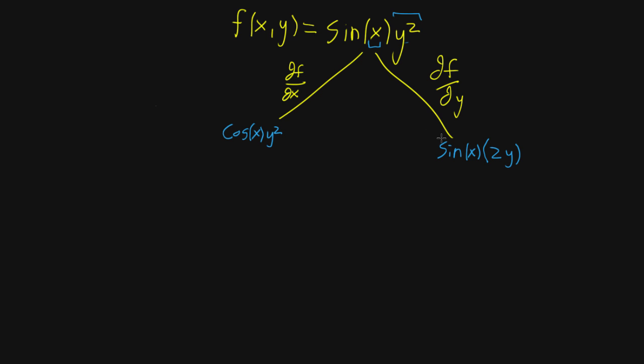These are what you might call first partial derivatives. There's some alternate notation here, df/dy you could also say f with a little subscript y. Similarly, you'd say f with a little subscript x. Now each of these two partial derivatives are also multivariable functions. They take in two variables and output a scalar.